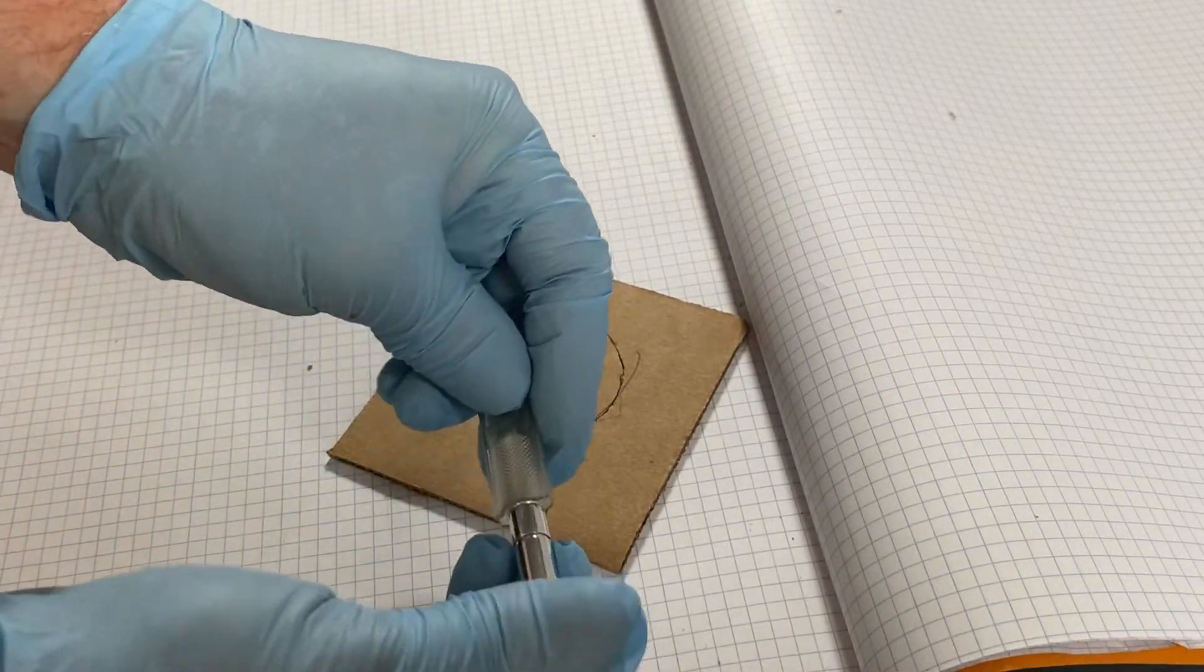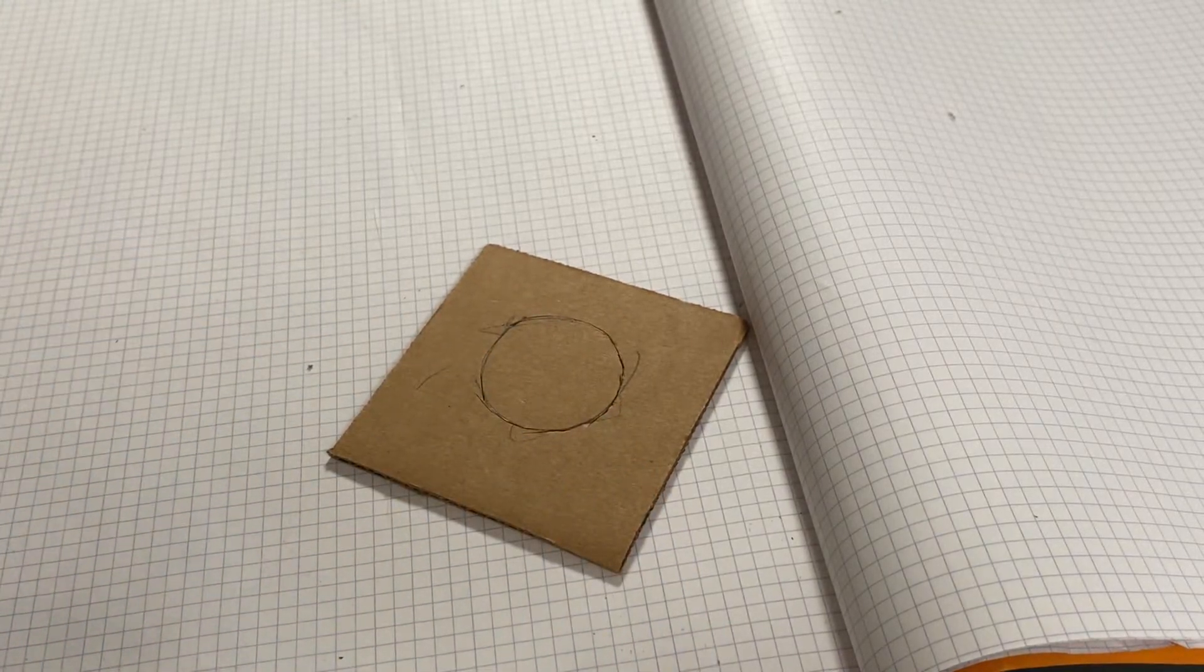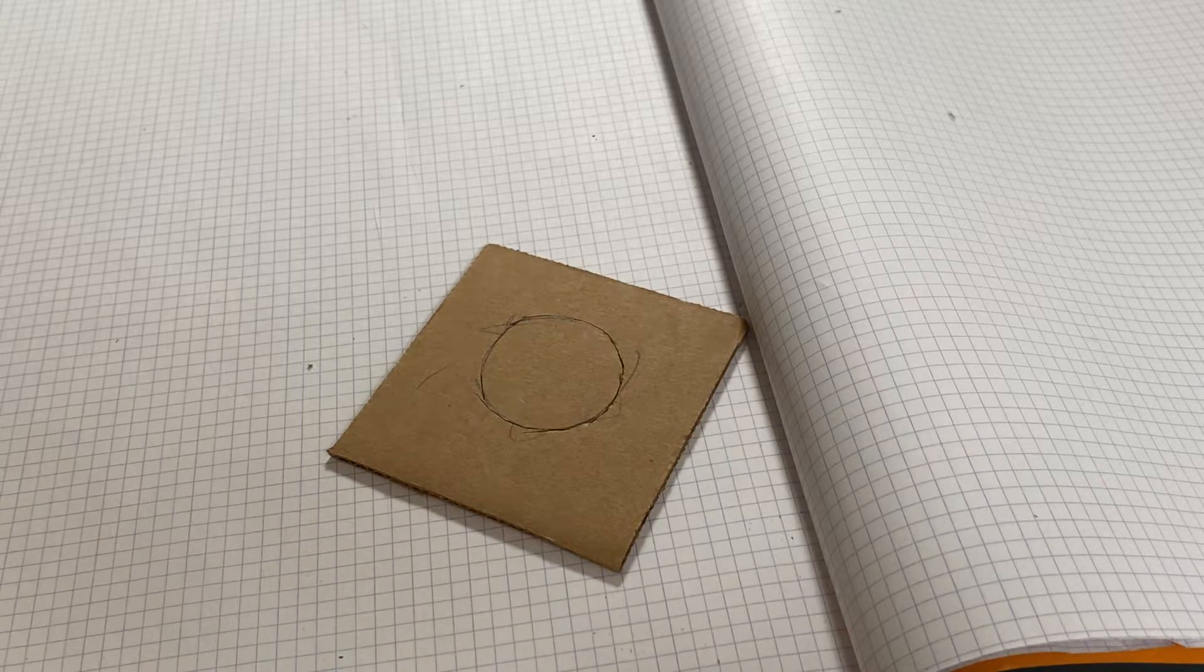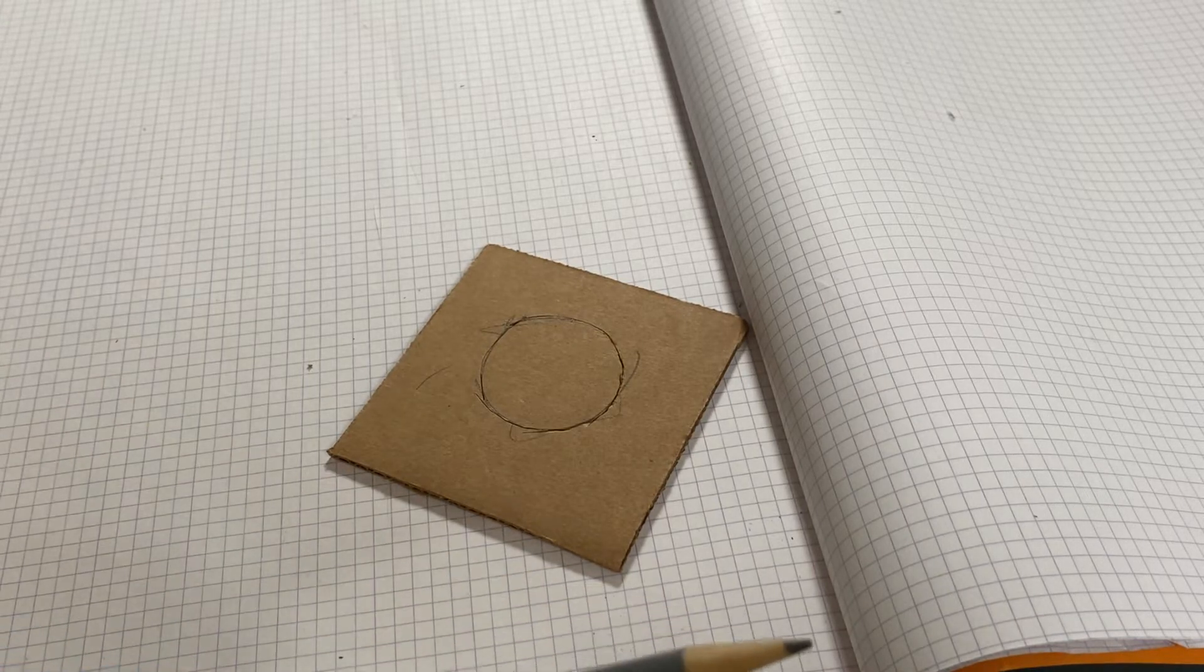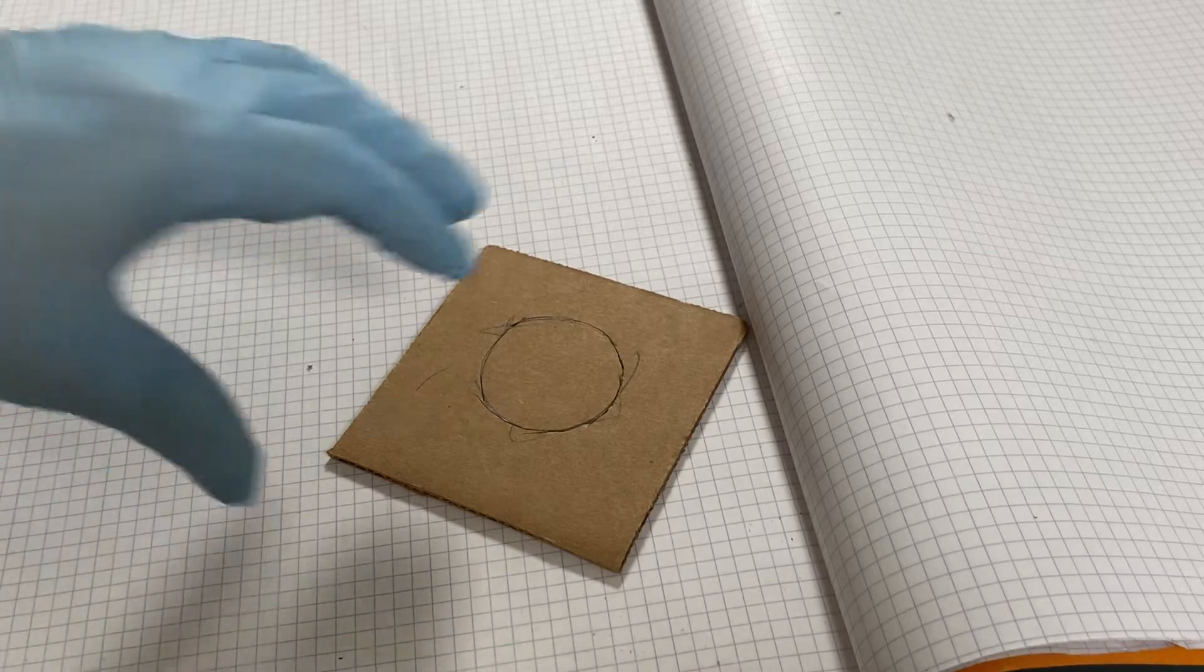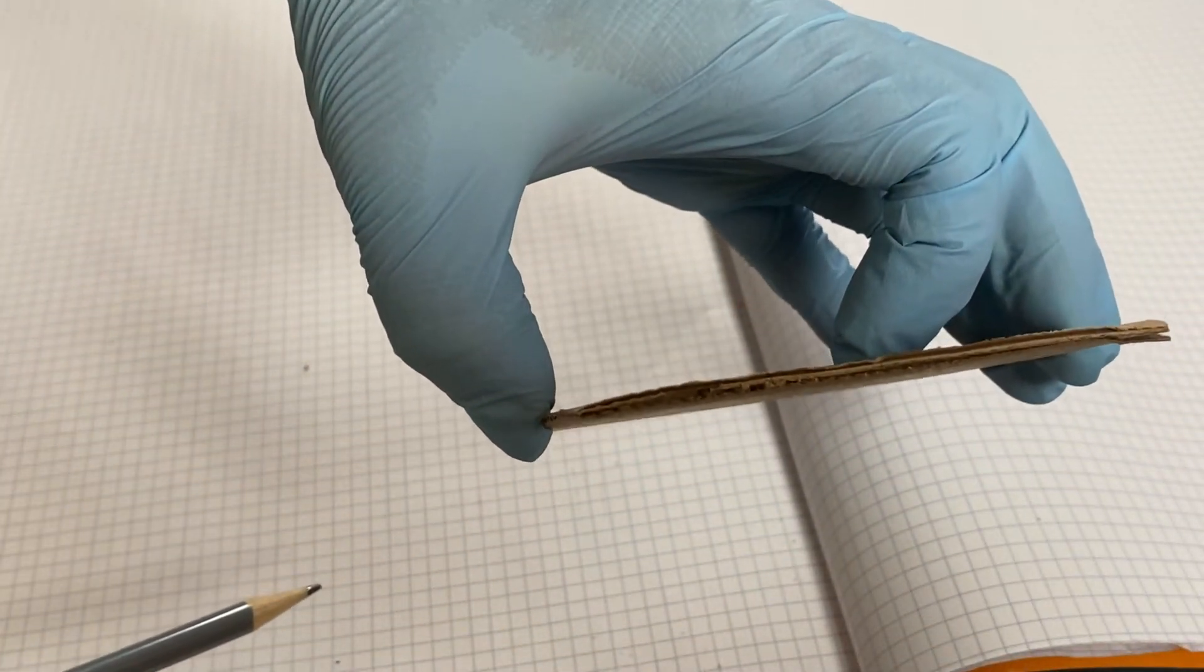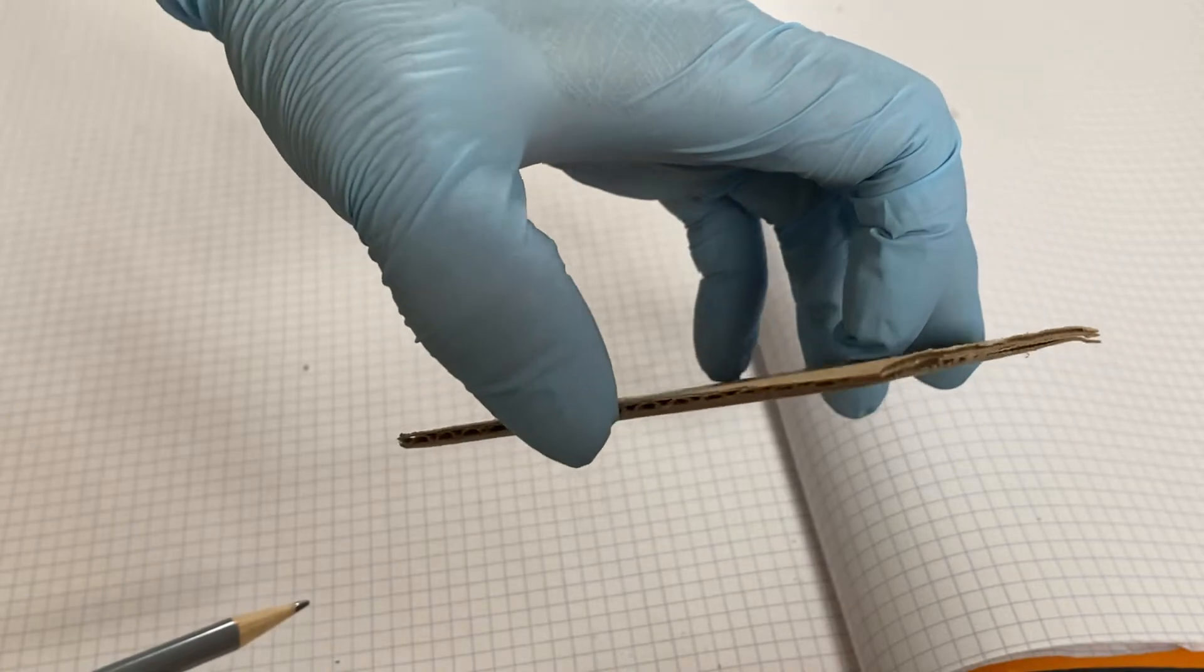Put your cap back on that blade. All right, next, let's use a dull pencil like this to remove the top layer. So we see that this side is not the side we need.